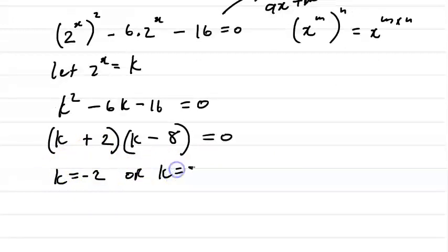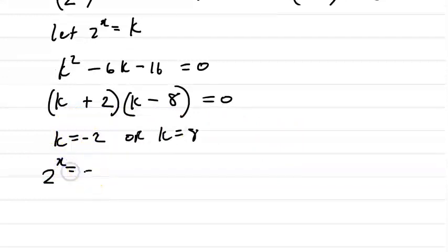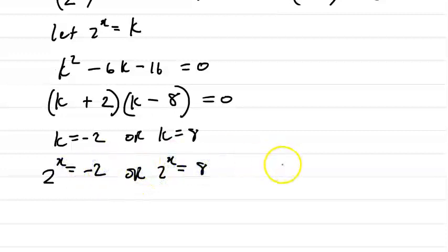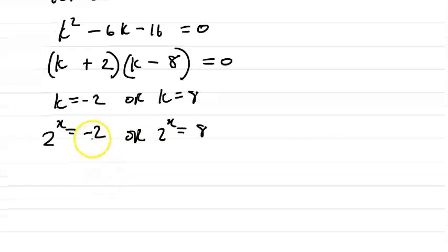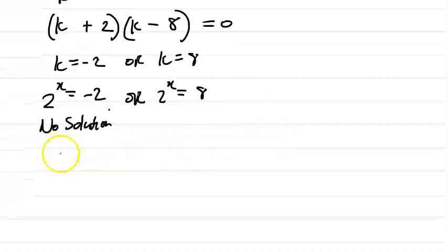Or k equals positive 8. Now substituting back: 2 to the x equals negative 2, or 2 to the x equals 8. The first case, 2 to the x equals negative 2, gives no solution. Let me explain why.